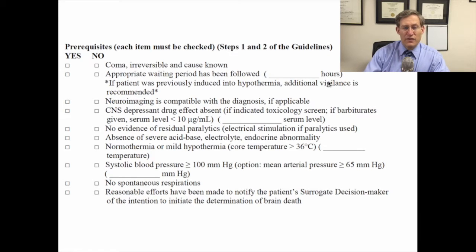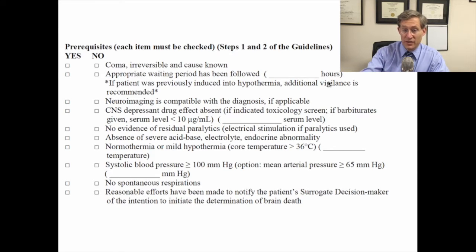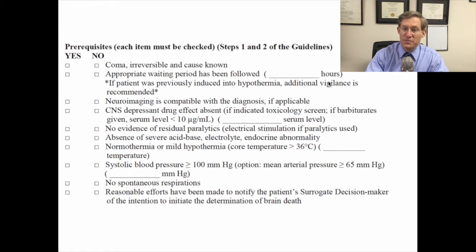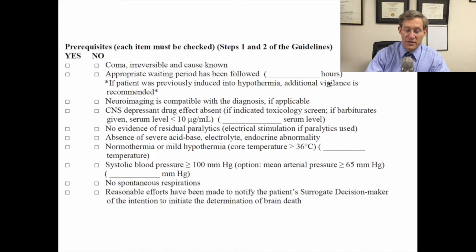The first steps are to make sure that there is a coma present that is irreversible and the cause is known. Some of these issues are somewhat complex and would be beyond the scope of this instructional video, but nevertheless, to the extent that it's possible, it's very important that the etiology of the coma is carefully documented. The appropriate waiting period has been followed, and clinician judgment is to be used here. There is no longer a focus on two neurological examinations, but rather an appropriate clinical waiting period has occurred and has been documented.